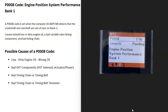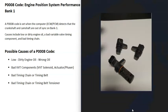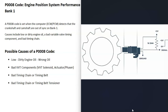Today I'm talking about a P0008 code — what it is and how you go about fixing it. A P0008 is an Engine Position System Performance Bank 1. Basically, there are sensors tracking the camshaft and the crankshaft as they spin, reporting this information back to the computer. When you get a P0008 code, the computer is seeing that there's an issue with this information coming from these sensors — that it's off for some reason.